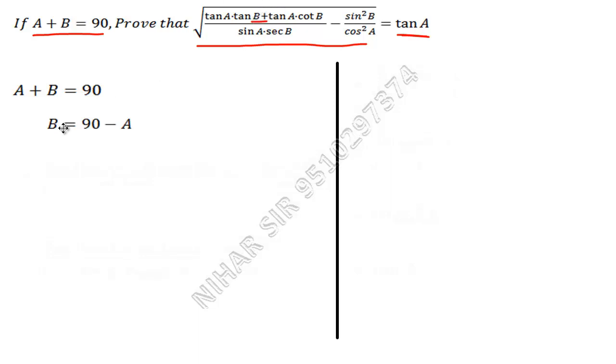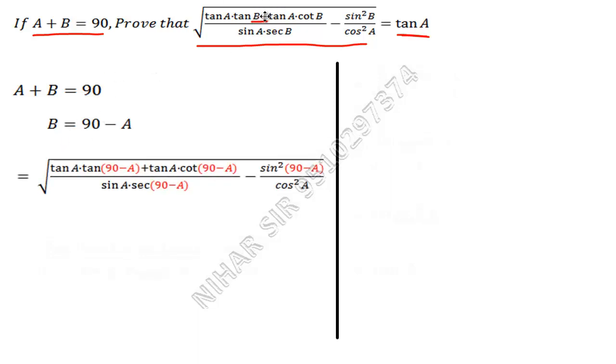Now in this expression I will substitute 90 minus A wherever I have B. Instead of B, I will write 90 minus A. So this will be something like this: wherever I have B, you can see I wrote 90 minus A.